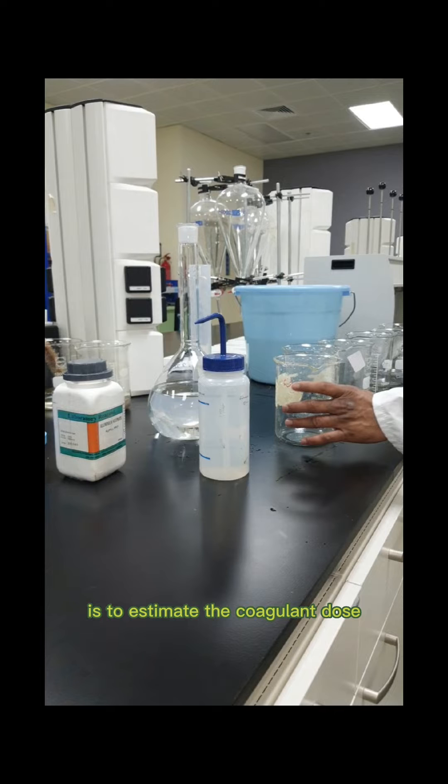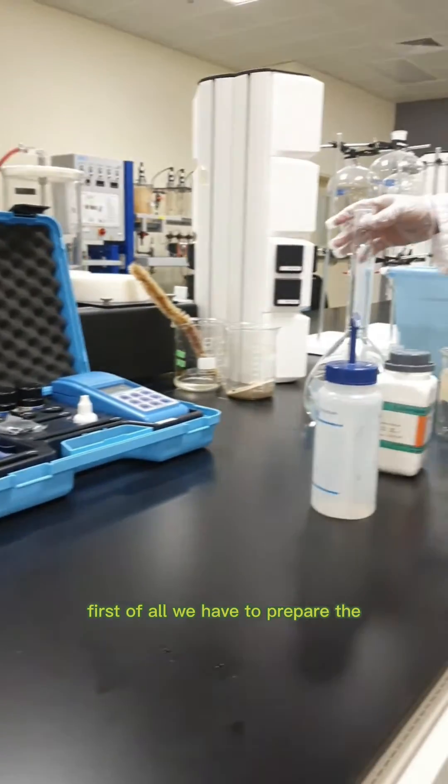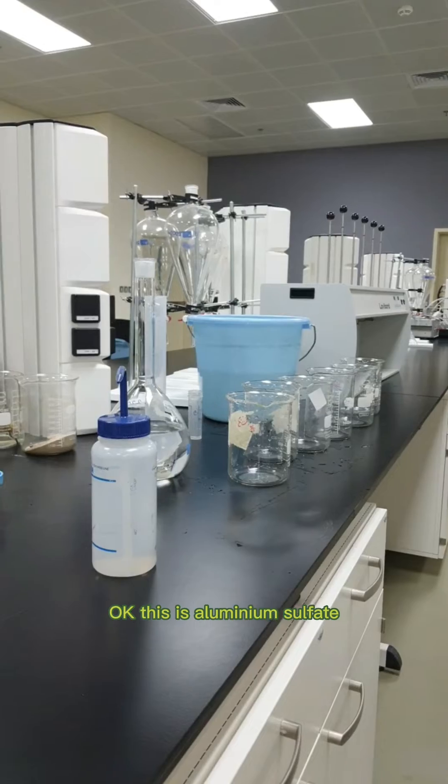For these tests, first of all, we are going to prepare the coagulants in distilled water. We also need glass beakers, jars, and stirring equipment. We need prepared synthetic water, or you can also use water from the treatment plant. The objective of today's experiment is to determine the optimal coagulant dose. This is aluminum sulfate.